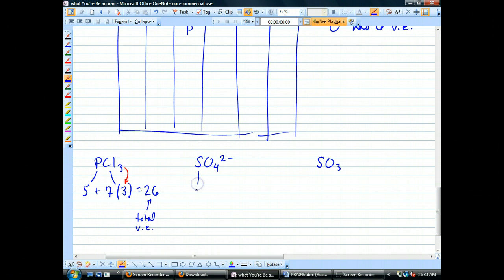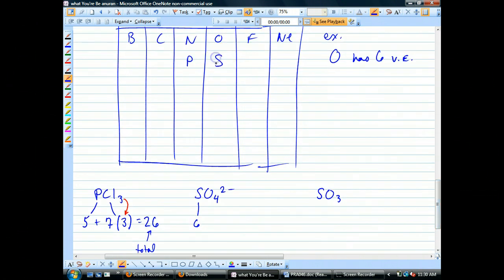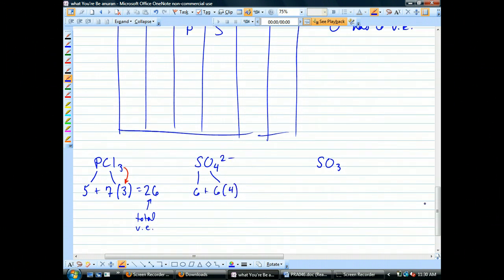I'm still doing step one, which is to count the valence electrons. Phosphorus has five, chlorine has seven, but there are three chlorines. So there are three chlorines. See that? Number three there, I'm multiplying. What I'm trying to do here is how many total valence electrons are there on the whole molecule? So you find each element, and then you add them all up. So it's going to be five plus 21 is 26. This is the total valence electrons.